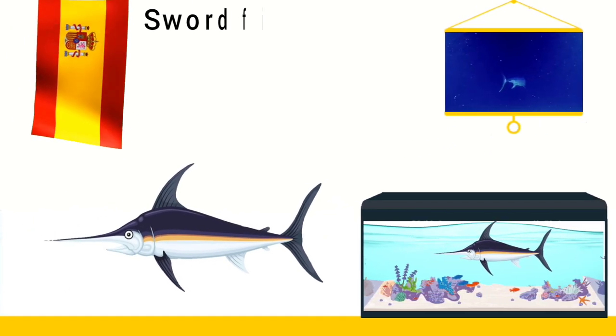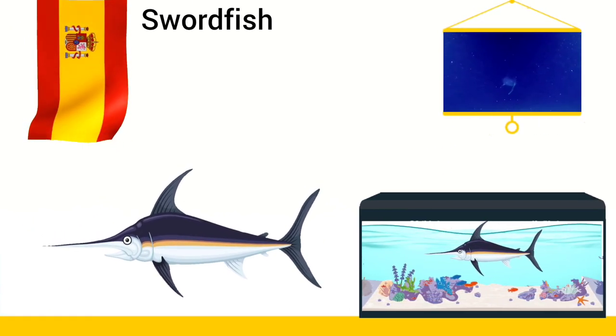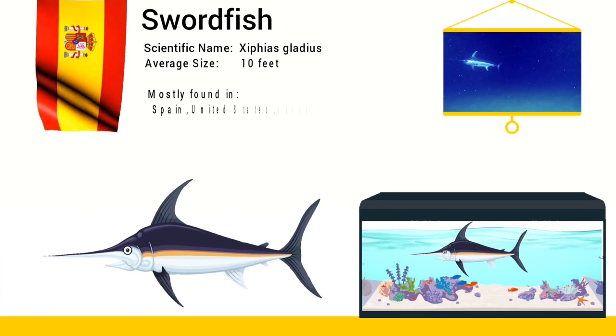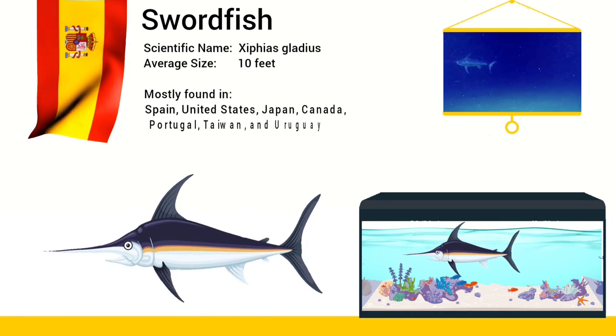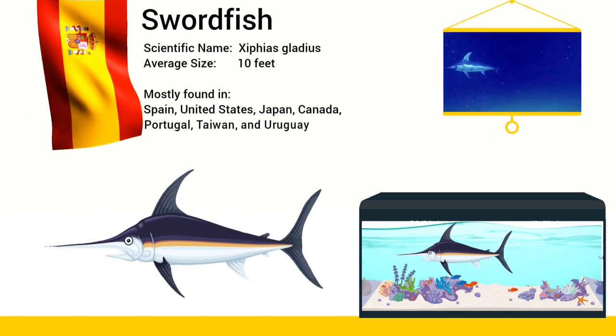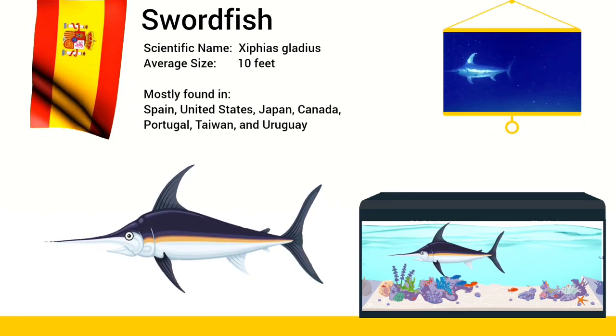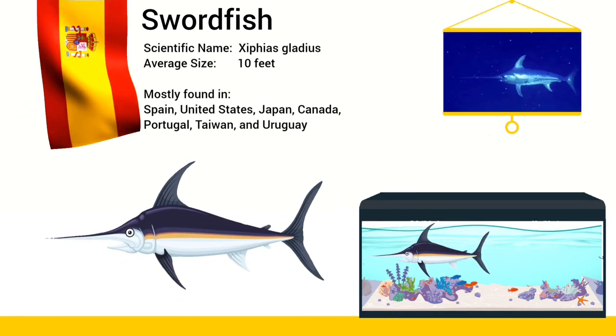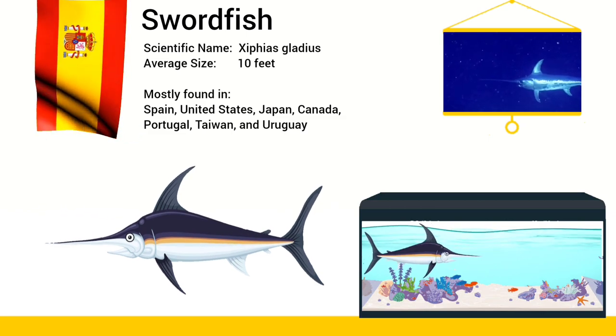Swordfish are found around the world in tropical, temperate and sometimes cold waters of the Atlantic, Indian and Pacific Oceans.